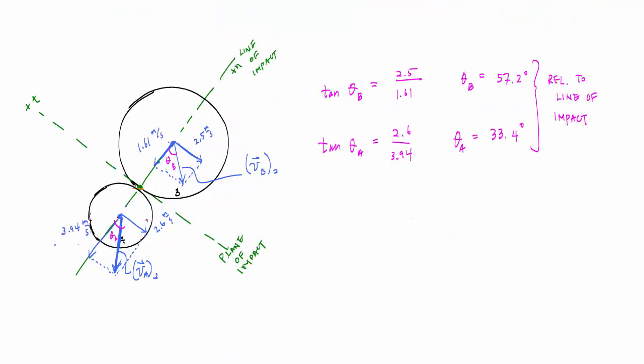If I wanted the magnitudes of these velocities, so here the velocity of B here would be the square root of some squares at magnitude. And this would be 1.61 meters per second squared plus 2.5 meters per second squared, and that magnitude is 2.97 meters per second. And the magnitude of A, similarly using the square root of some squares, is equal to 4.72 meters per second. And we have an angle relative to the normal.